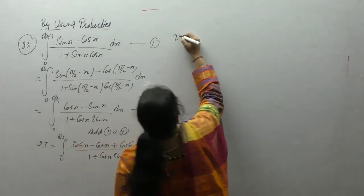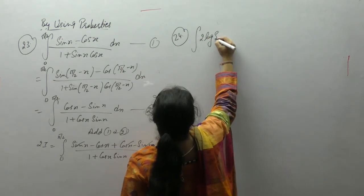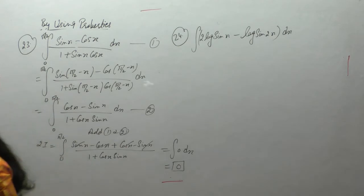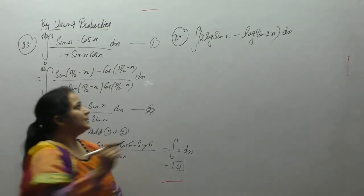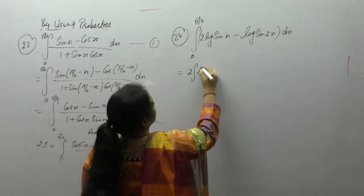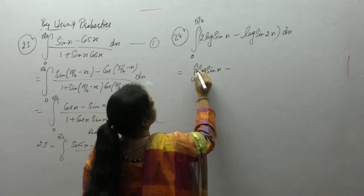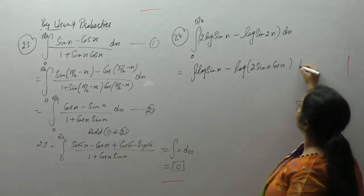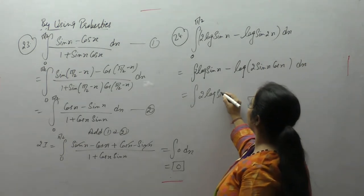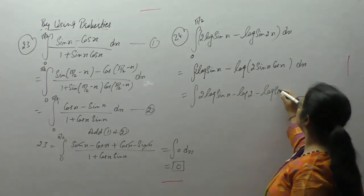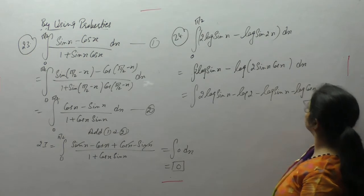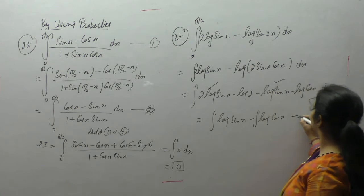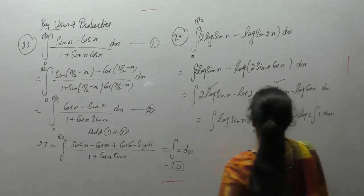Next is the integral of (2 log(sin x) - log(sin 2x)) dx with limits 0 to π/2. Since sin 2x = 2 sin x cos x, we expand using log(a·b) = log a + log b. After simplification, 2 minus 1 gives 1, so we get log(sin x) minus log(cos x) minus log 2, which is a constant, with limits 0 to π/2.